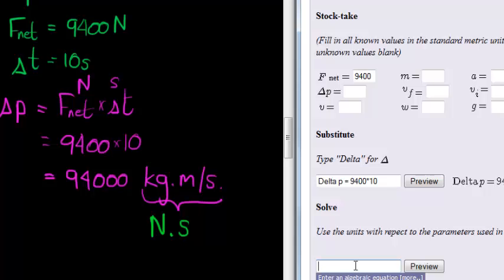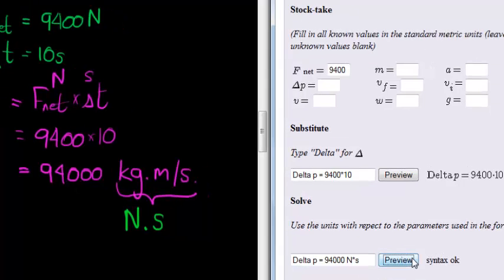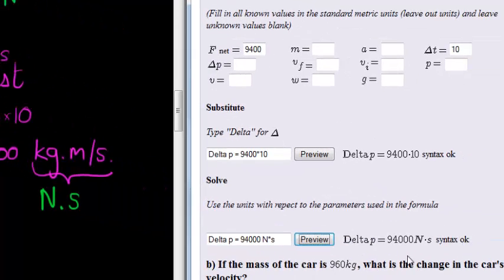So we are typing in our answer of delta P is equal to 9400 newton seconds. Preview. Again, it says syntax is okay, so I'm using the correct units, as well as the delta that's typed out.